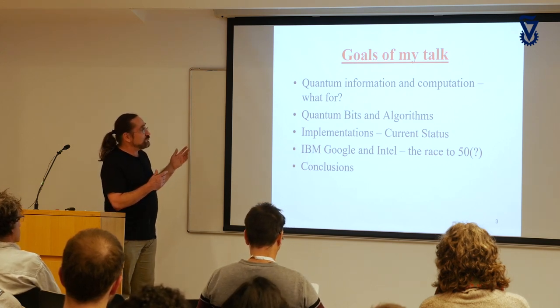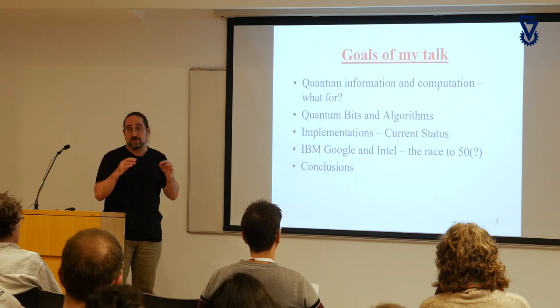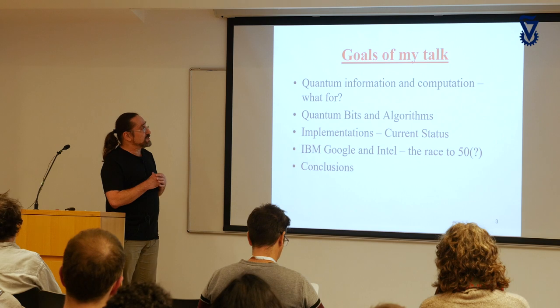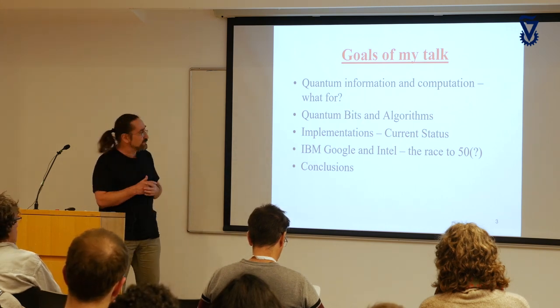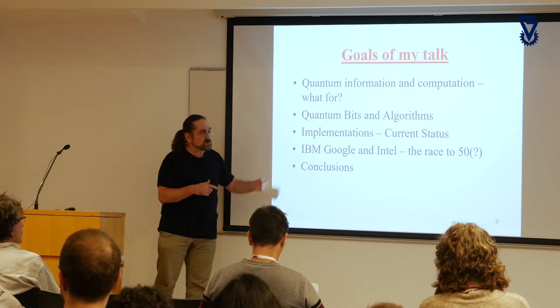Most of you know what we need quantum computers for, but I will try to make it more precise. There are quantum bits and algorithms — I will not talk about implementation. What is this race to quantum supremacy? Maybe it can be reached with 50 qubits, maybe we need 70 or 100. It depends because these qubits are not sufficiently clean, and dealing with errors is a huge part of whether they can prove supremacy or not.